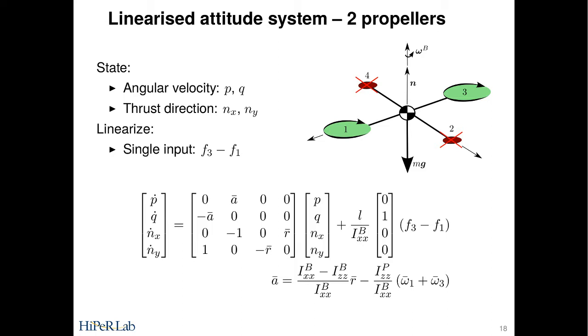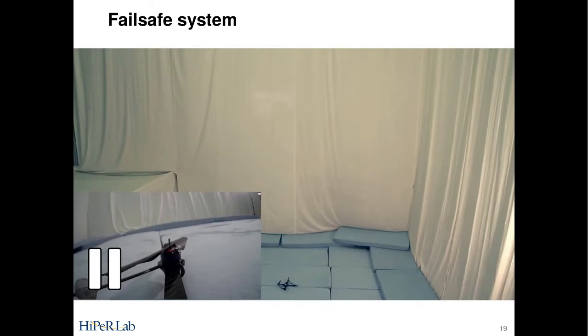The linearized dynamics look as follows. The A matrix is very sparse, and there's lots of zeros. Only two interesting numbers: R bar is the steady state speed with which you're rotating about the thrust direction, and A bar is this complicated expression that's a function of the mass and the inertia of the body, the speed with which you are rotating, the mass and inertia of the propellers, and the speed with which the propellers are rotating.